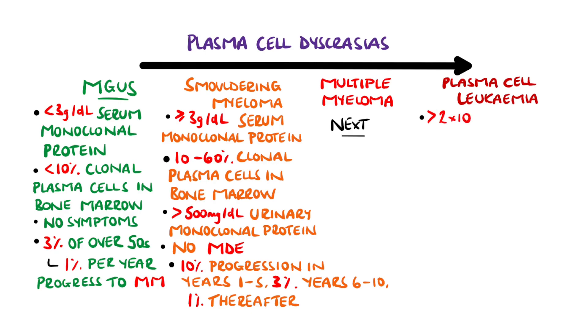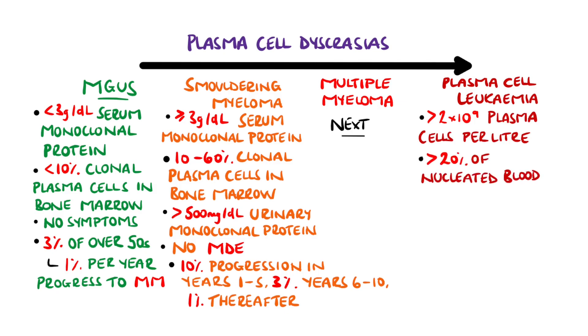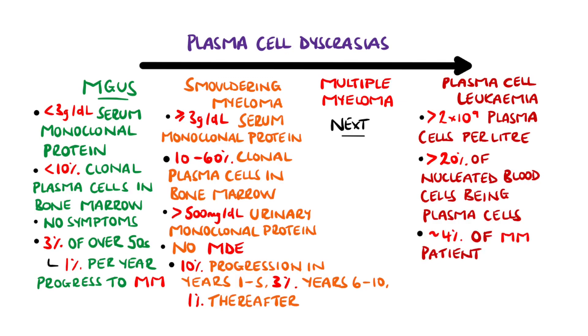The most advanced form is plasma cell leukemia, affecting around 4% of those with multiple myeloma, although it does not have to progress through from other dyscrasias to be diagnosed.